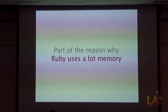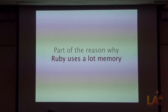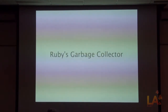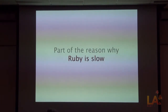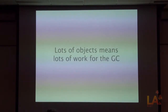This is part of the reason why Ruby takes up a lot of memory. Ruby does use a lot of memory, and we know that from our Rails apps. There are a lot of objects that are instantiated, and all that takes up a lot of memory. Ruby's garbage collector — the only thing that manages this memory — is part of the reason why Ruby is slow. Lots of objects means lots of work for the garbage collector to do, so I'll go over the algorithm that requires all that work.